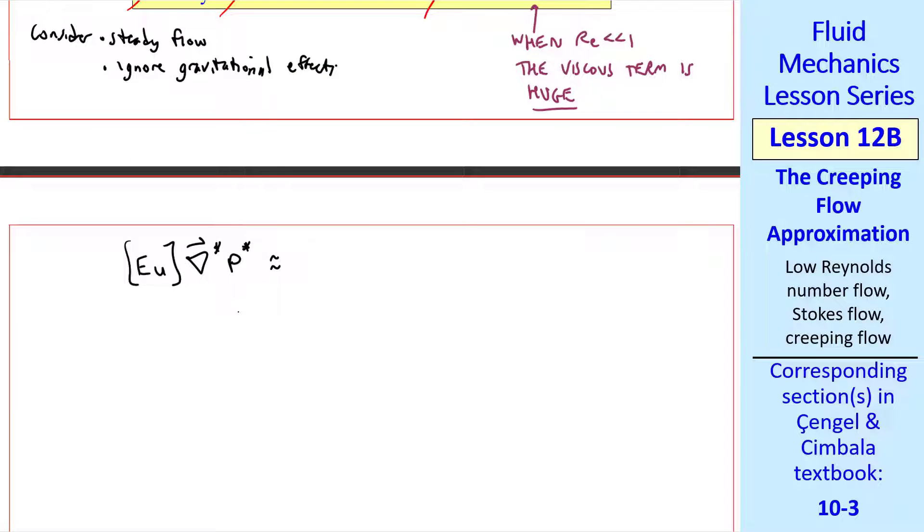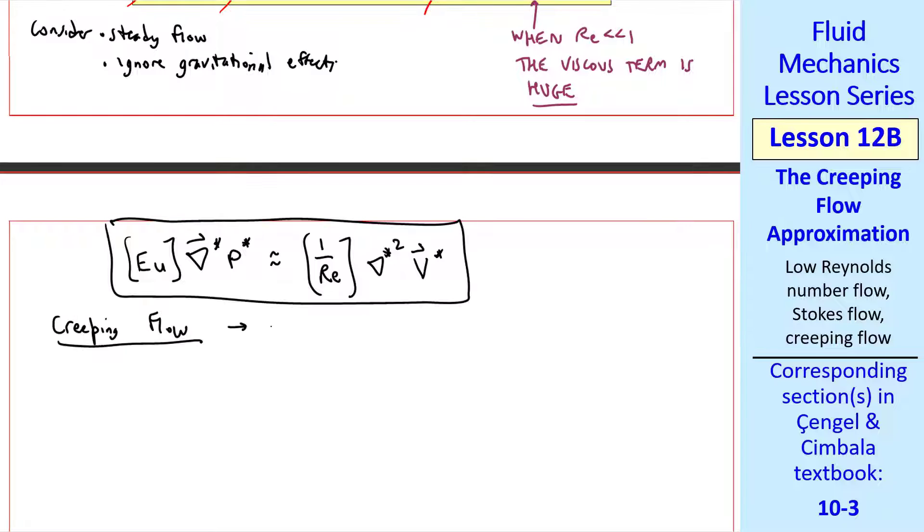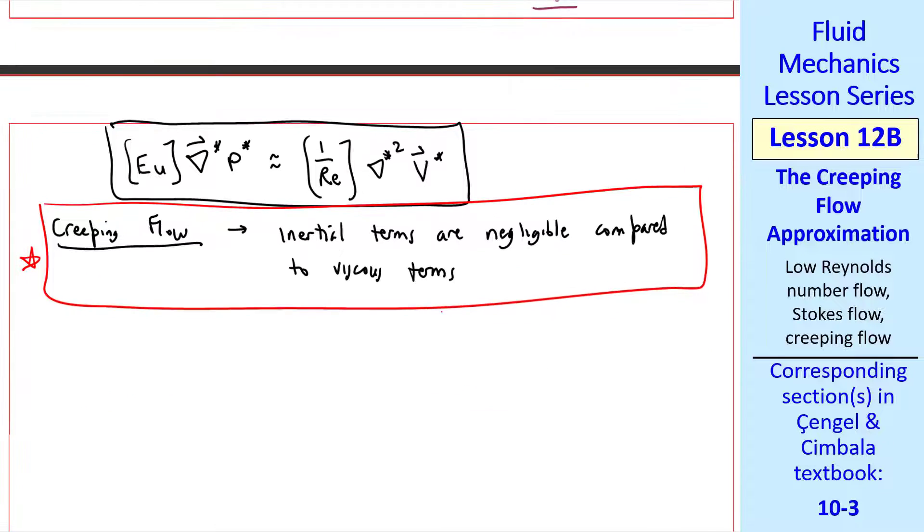We end up with this approximate equation. Euler number times del star p star is approximately one over Reynolds number times del star squared v star. Another definition of creeping flow is flows in which inertial terms are negligible compared to viscous terms. Notice that the inertial terms have dropped out.